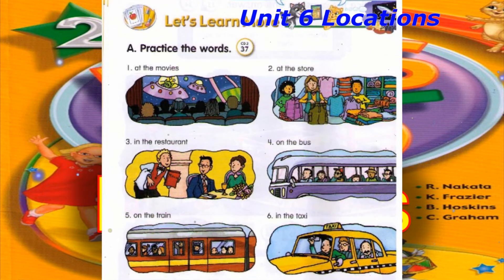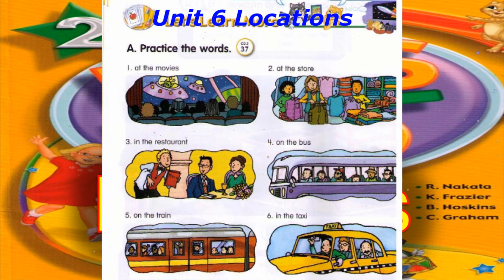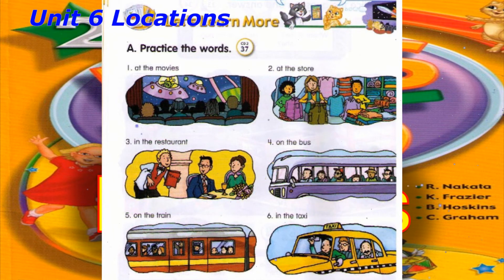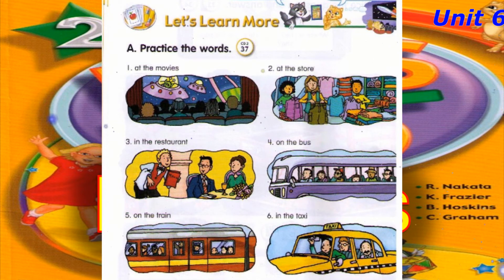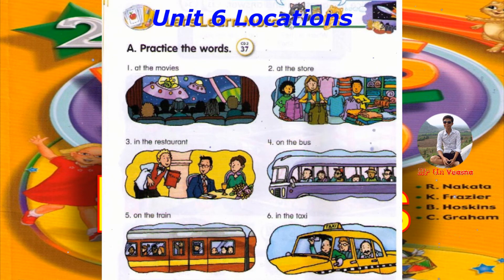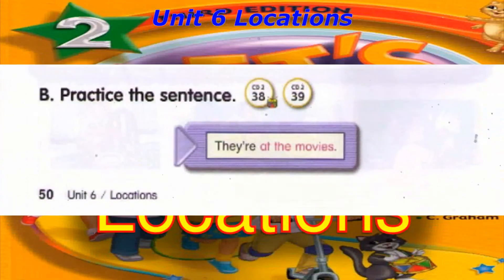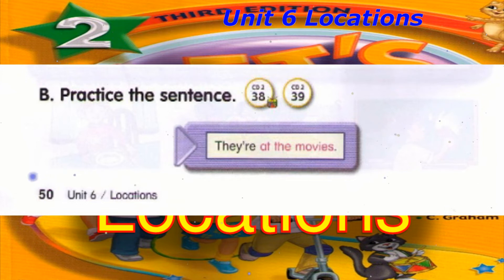Track 37. Let's learn more. A. Practice the words. Number 6: In the taxi. Track 38. B. Practice the sentence. They're at the movies.